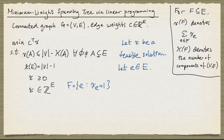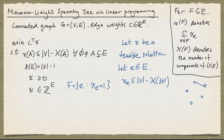Let's take an edge e. By this inequality, we know X_e is at most the number of nodes minus the number of components in the graph with node set V and edge set containing just e. If you look at a graph with five nodes and throw in a single edge, because it joins exactly two nodes, the number of components is one less than the number of nodes. So X_e is at most one. Since X has only integer entries, X is a zero-one vector.